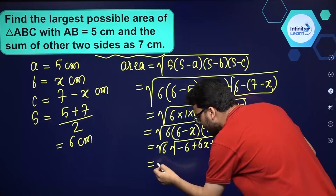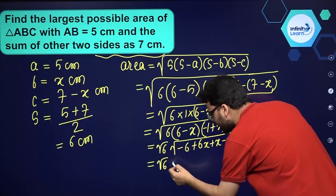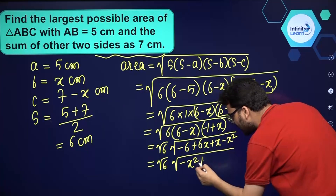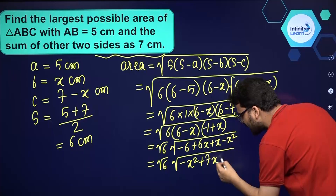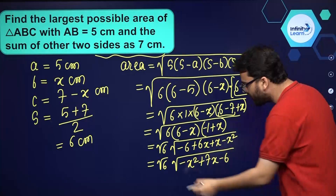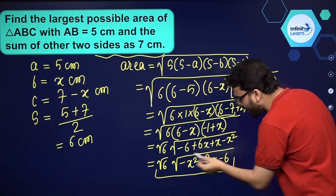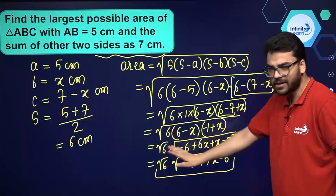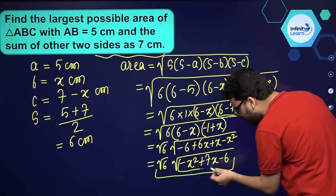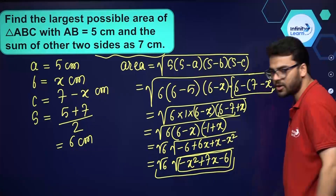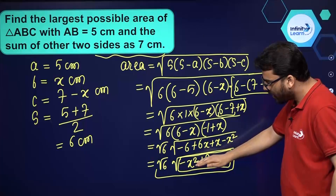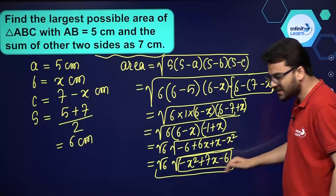So the area simplifies to √6 times √(−x² + 7x − 6). Since √6 is just a constant, we need to find the maximum possible value of the quadratic expression inside the square root, which is −x² + 7x − 6.